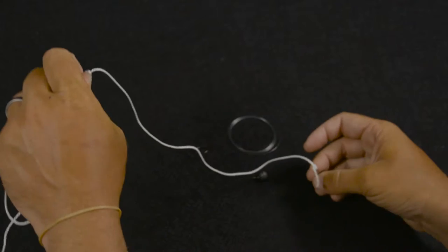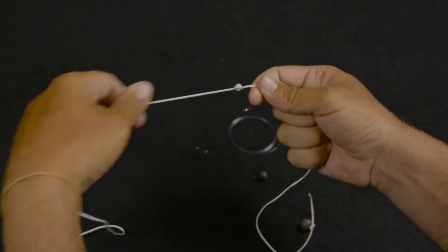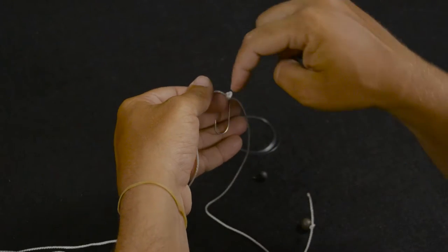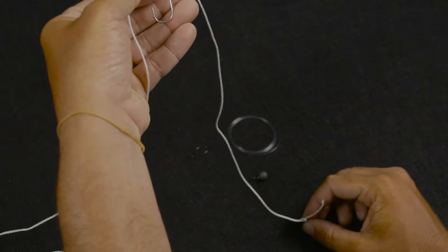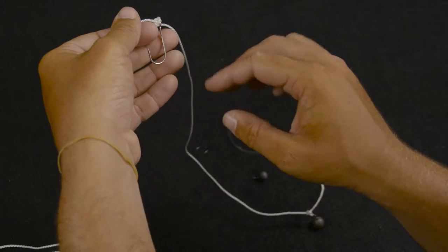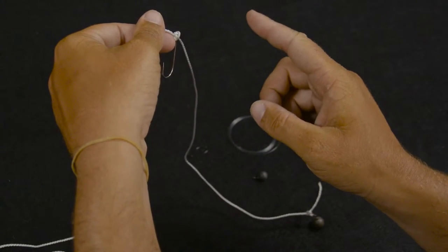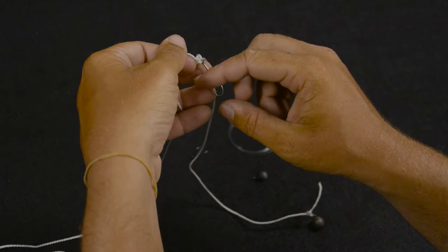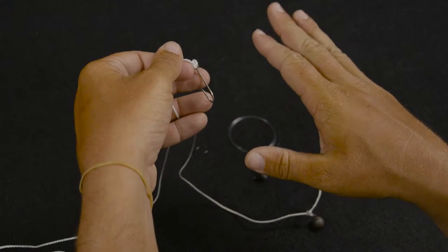And that is a fully rigged drop shot. Hook pointing upward because of how I passed it down through it. That weight's going to sit on the bottom and that hook's going to be up here. And when you barely even shake that line with a drop shot once you rig a worm on there, it just makes that worm dance and wiggle.